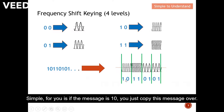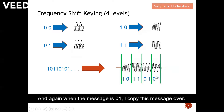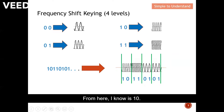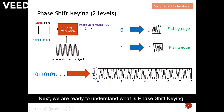I group the digital data two bits at a time to arrive at this waveform. If the message is 10 I copy that waveform; if it's 11 I copy that waveform; if it's 01 I copy that waveform; and again 01 I copy that message. To read the data, look at the frequency — this is 10, this has the highest frequency so it's 11, and these are 01 and 01. This is frequency shift keying with four levels.